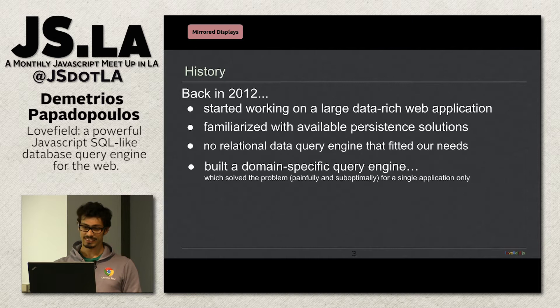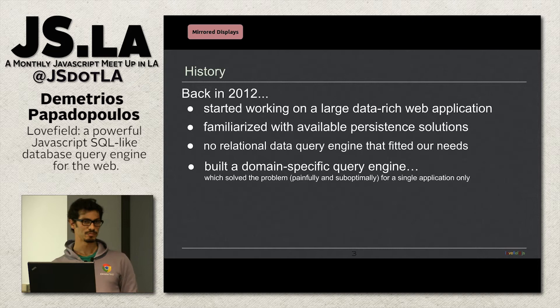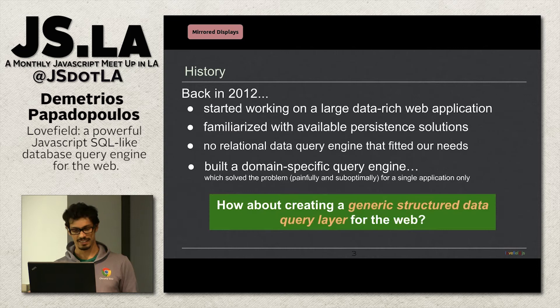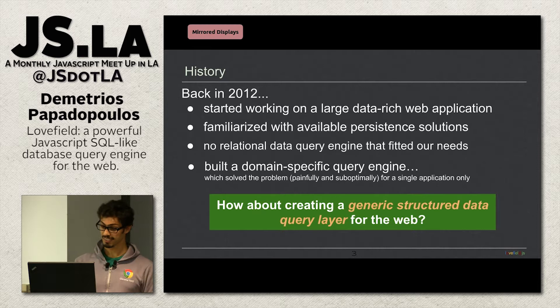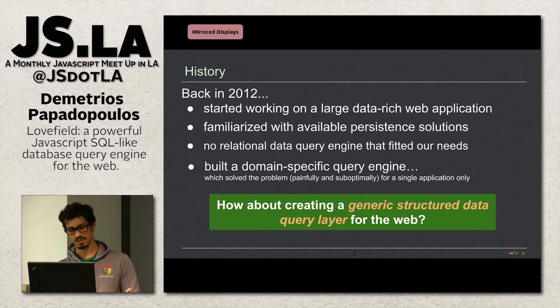It was obvious we'd have to persist some data to fulfill the requirements. We looked at available solutions and didn't find anything fitting well with relational data, which is what we were dealing with. We solved it by building a domain-specific data access layer. It did work, but it was very hard to build, hard to maintain, painful — and we couldn't reuse it for any other application because it was tailored for this specific data set. That's when the idea came: what if we build a generic structured data query layer for the web?